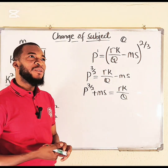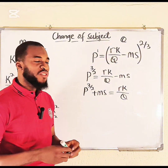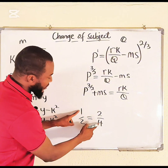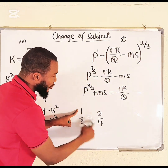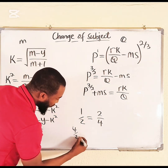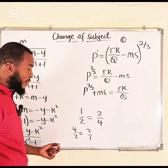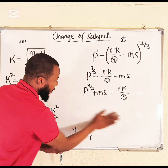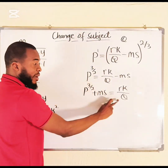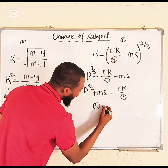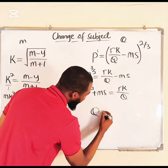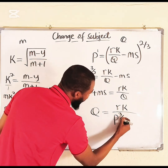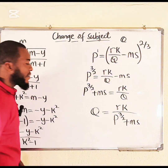There is a useful property with rational expressions: you can switch terms across an equation. For example, if 1/2 = 2/4, you can switch to get 4/2 = 2/1. Applying this here, we can switch q and the whole left-hand expression: q = rk / (p^(3/2) + ms). So q is now the subject of the formula.